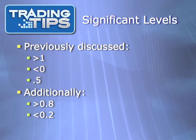In addition to the previously discussed significant levels — greater than 1, less than 0, and above or below 0.5 — there are two other levels that chartists are concerned with. Levels of greater than 0.8 can indicate overbought status, while levels of less than 0.2 can indicate oversold.